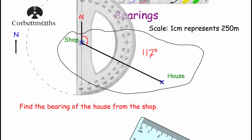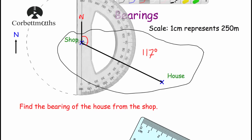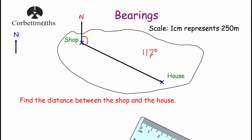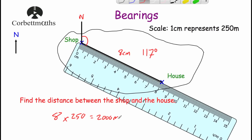The last part says find the distance between the house and the shop. We measure the length of the line joining them — starting at zero at the shop and going along to the house, that is 8 centimetres. We know one centimetre is 250 metres, so it's 8 lots of 250. Eight multiplied by 250 is 2,000. So the distance between the house and the shop is 2,000 metres.